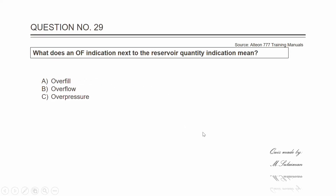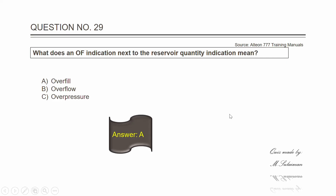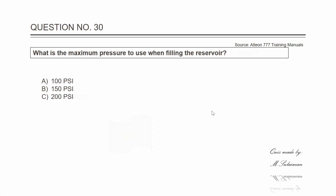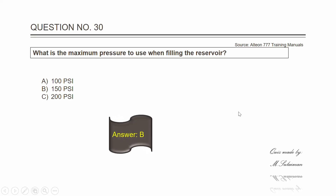Question twenty-nine: what does an OF indication next to the reservoir quantity indication mean? The answer is A — overfill. Question thirty: what is the maximum pressure to use when filling the reservoir? The answer is B — 150 PSI.